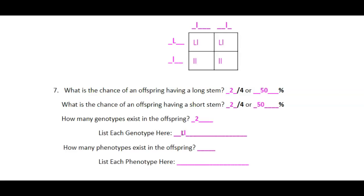What are they? Well, I could have an offspring that's big L little L, and one that's little L little L.